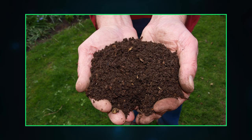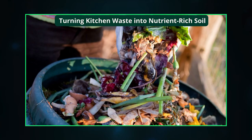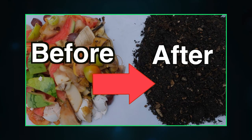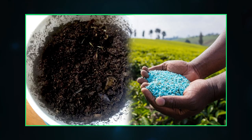Composting is a biological process in which microorganisms — mainly fungi and bacteria — convert degradable organic waste into humus-like substance. This finished product, which looks like soil, is high in carbon and nitrogen and is an excellent medium for growing plants. The composting process ensures that kitchen waste is not carelessly thrown away and left to rot — it recycles nutrients and returns them to the soil. Apart from being clean, cheap, and safe, composting can significantly reduce disposable garbage. The organic fertilizer produced is better than chemical fertilizers, especially for vegetables, increases the soil's ability to hold water, and makes the soil easier to cultivate.